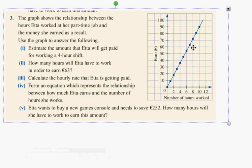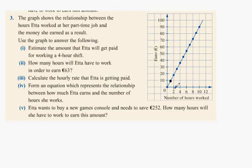What we have here is a straight line. The graph shows the relationship between the hours Etta works at her part-time job and the money she earns as a result. Use the graph to estimate the following.